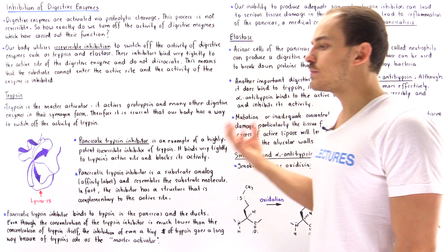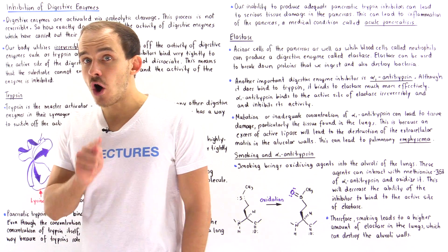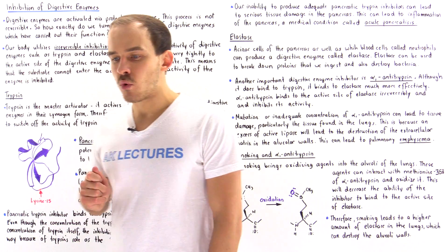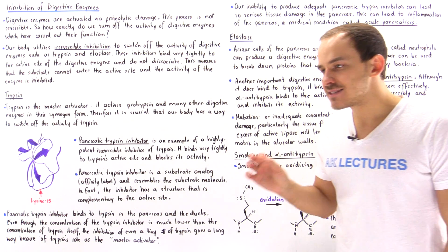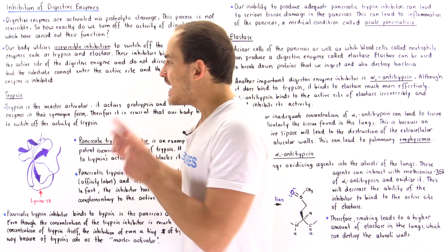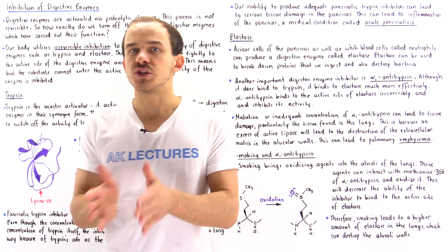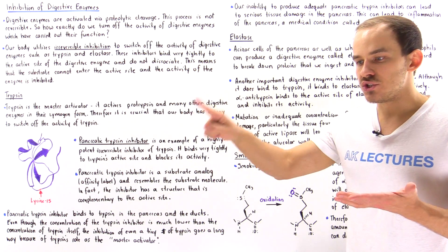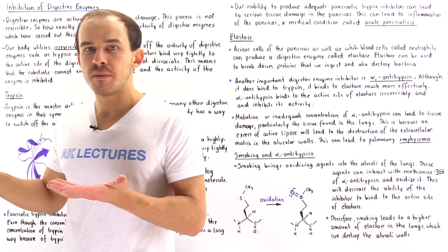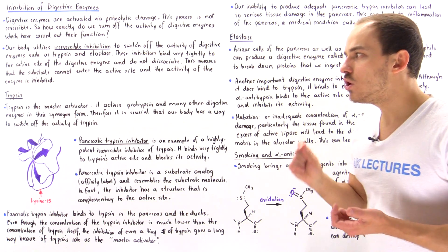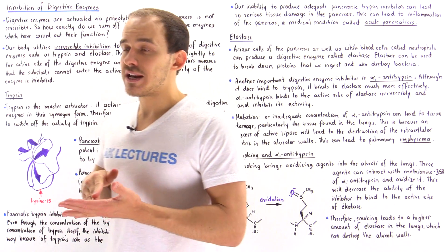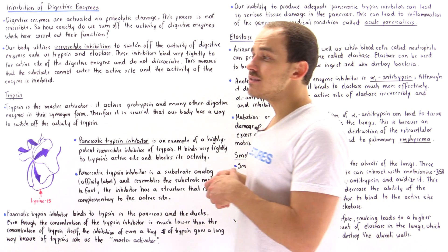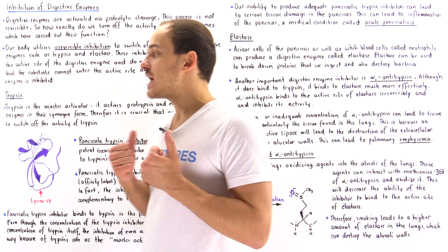Let's begin by focusing on trypsin and how our body regulates and turns off its activity. Trypsin is probably the most important digestive enzyme because it acts as a master activator — it activates all the different types of digestive enzymes from their zymogen form into their active form. It activates proelastase into elastase, procarboxypeptidase into carboxypeptidase, chymotrypsinogen, and even activates itself from trypsinogen, as well as prolipase into lipase.